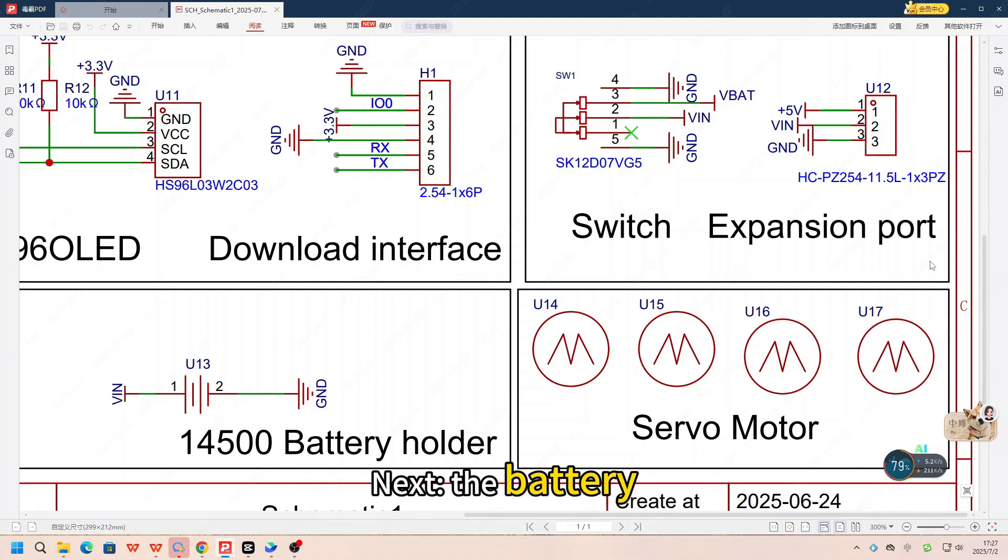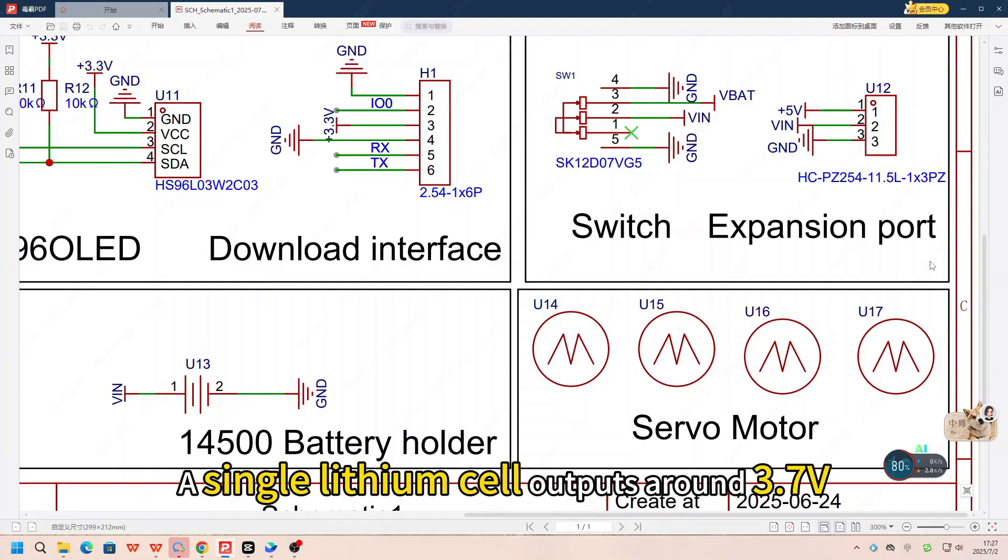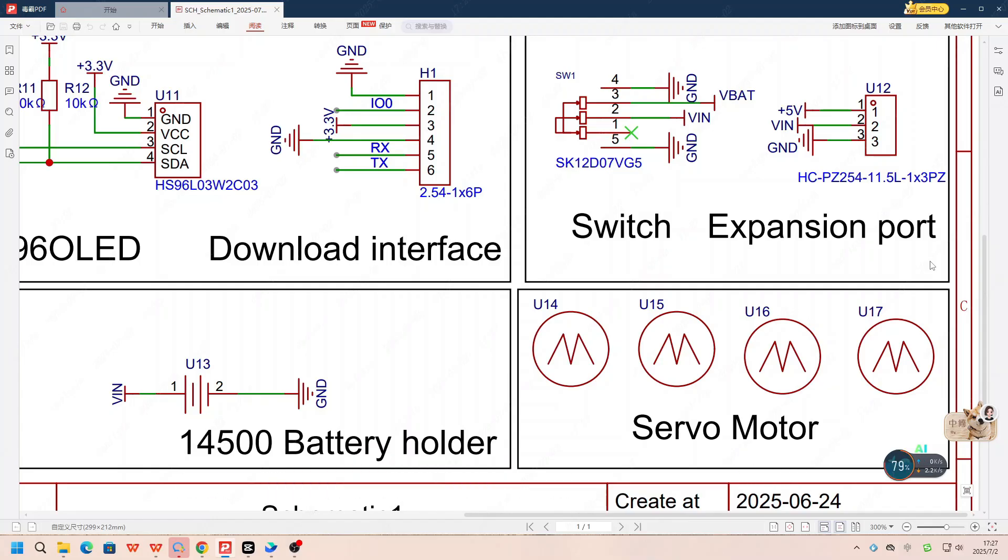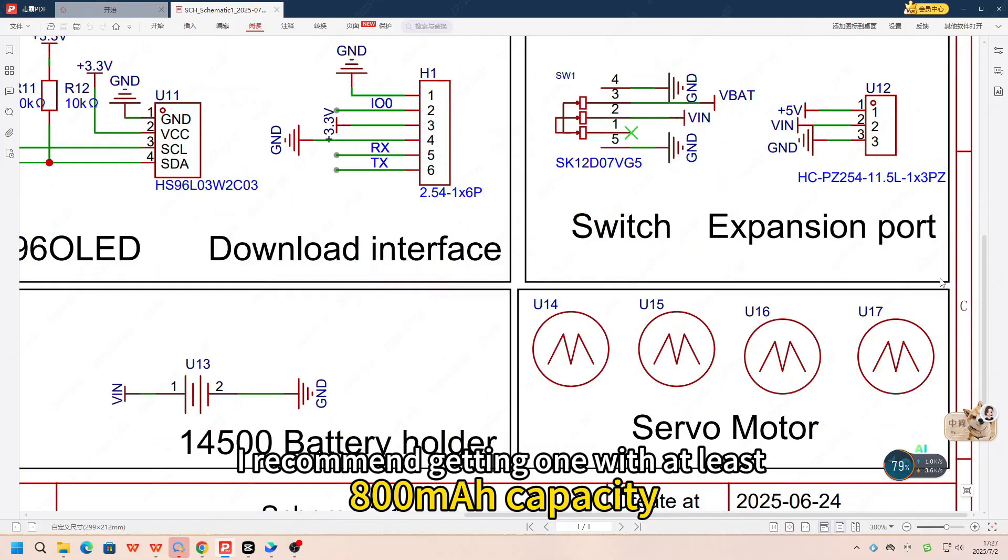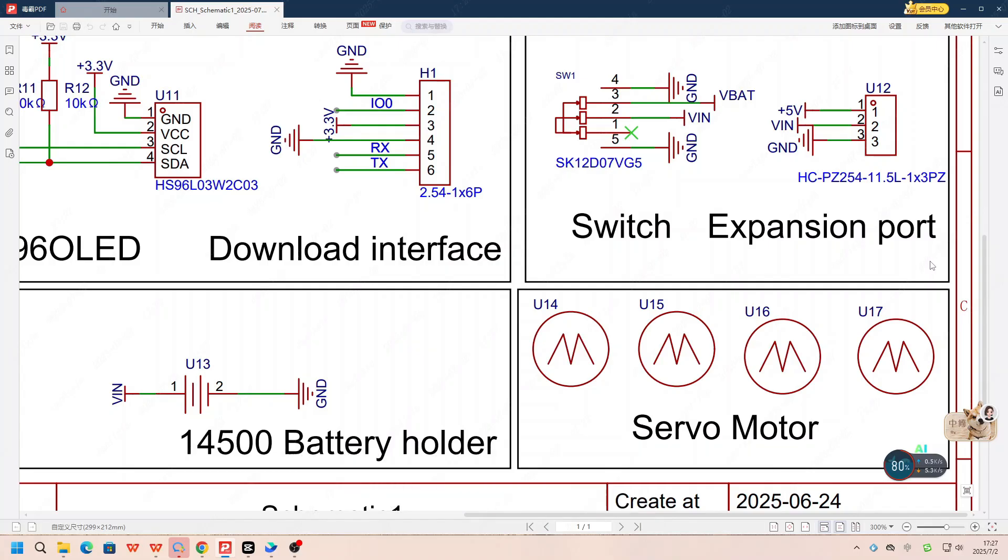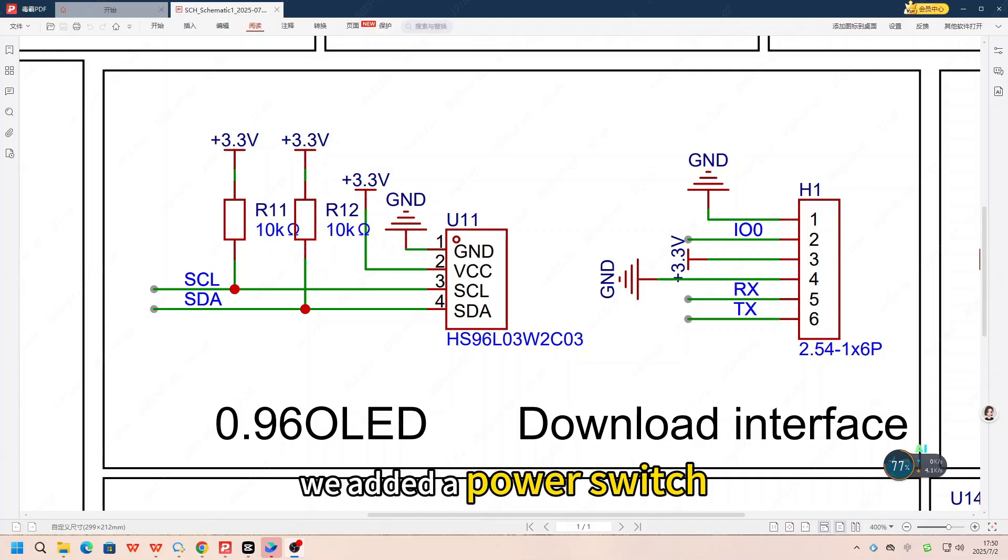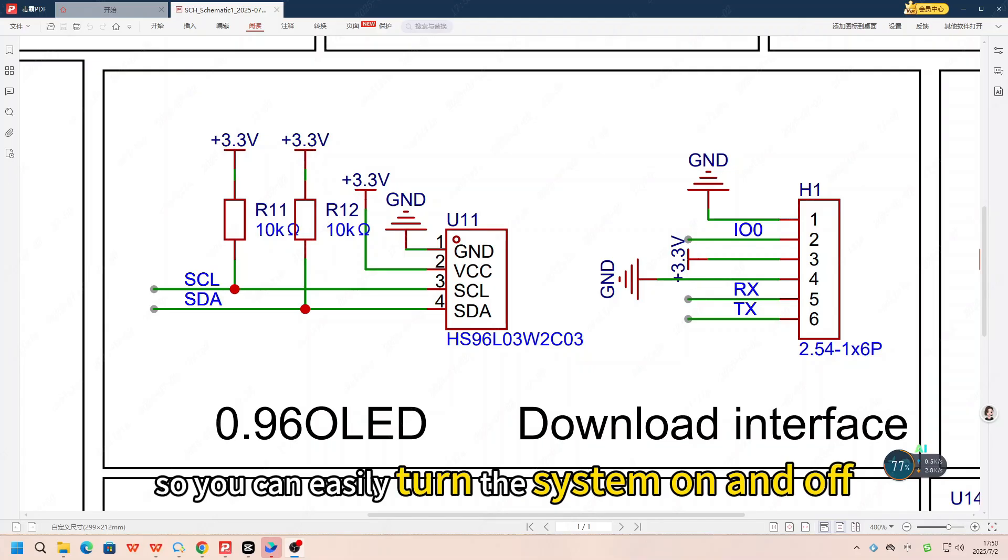Next the battery. A single lithium cell outputs around 3.7V, usually 800mAh or 1000mAh. I recommend getting one with at least 800mAh capacity. To make things more user-friendly, we added a power switch, so you can easily turn the system on and off.